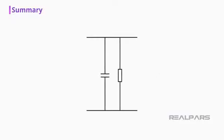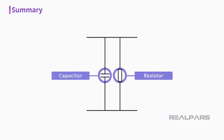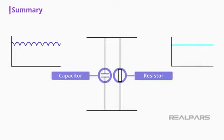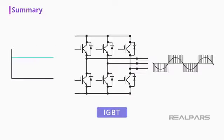The DC link, composed of capacitors and resistors, filters and buffers the DC. And the IGBT module, composed of transistors, converts the DC back to AC.